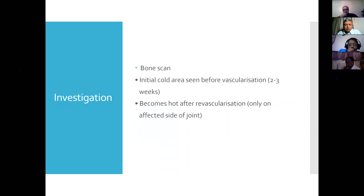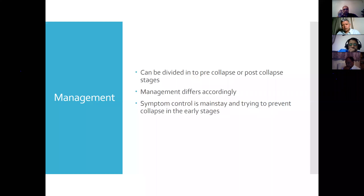Bone scan is another investigation — just in case somebody throws it in. Initially it is cold before vascularization, but after revascularization it becomes hot. How do we manage the patient? The key bit is the collapse stage: either you've got a pre-collapse patient or a post-collapse patient. From a management standpoint, the crescent sign is a big demarcator, and the management differs accordingly.